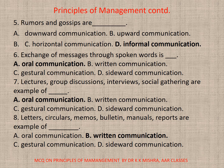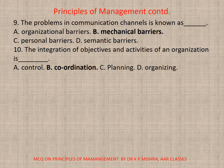Question 8: Letters, circulars, memos, bulletins, manuals, reports are examples of — correct option is b) Written communication. Question 9: The problems in communication channels is also known as — correct option is b) Mechanical/technical barriers. Question 10: The integration of objectives and activities of an organization is — correct option is b) Coordination.